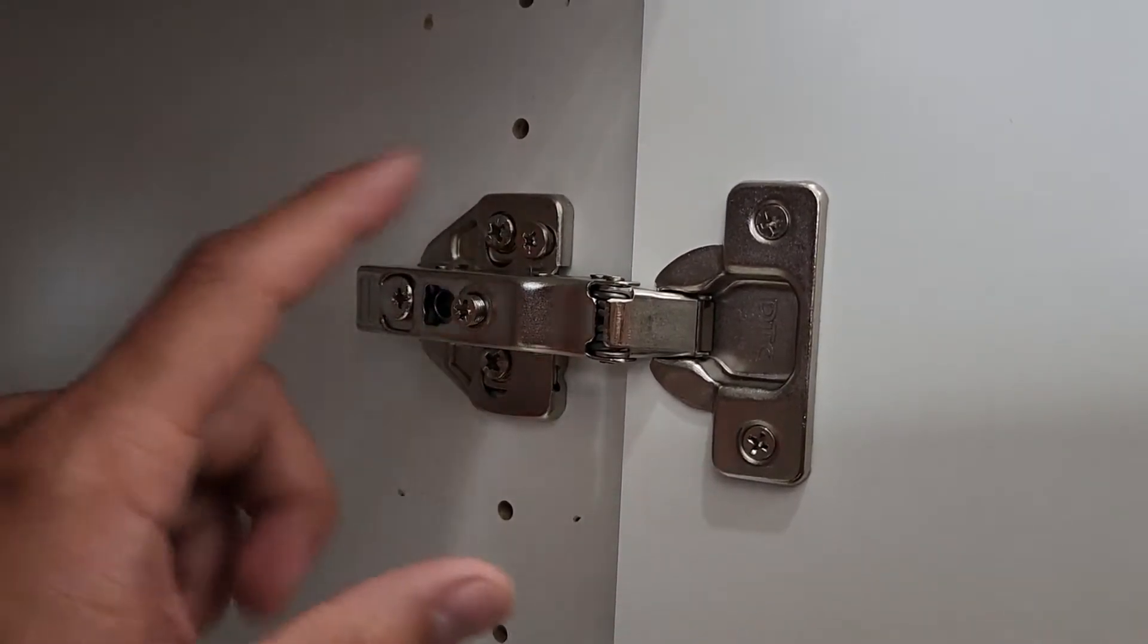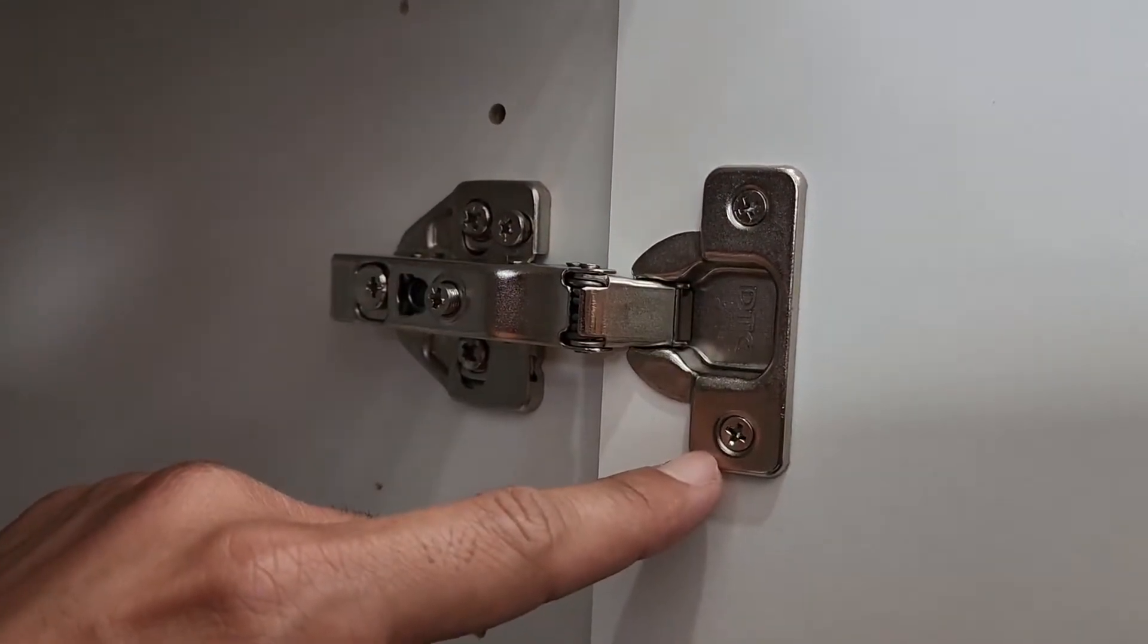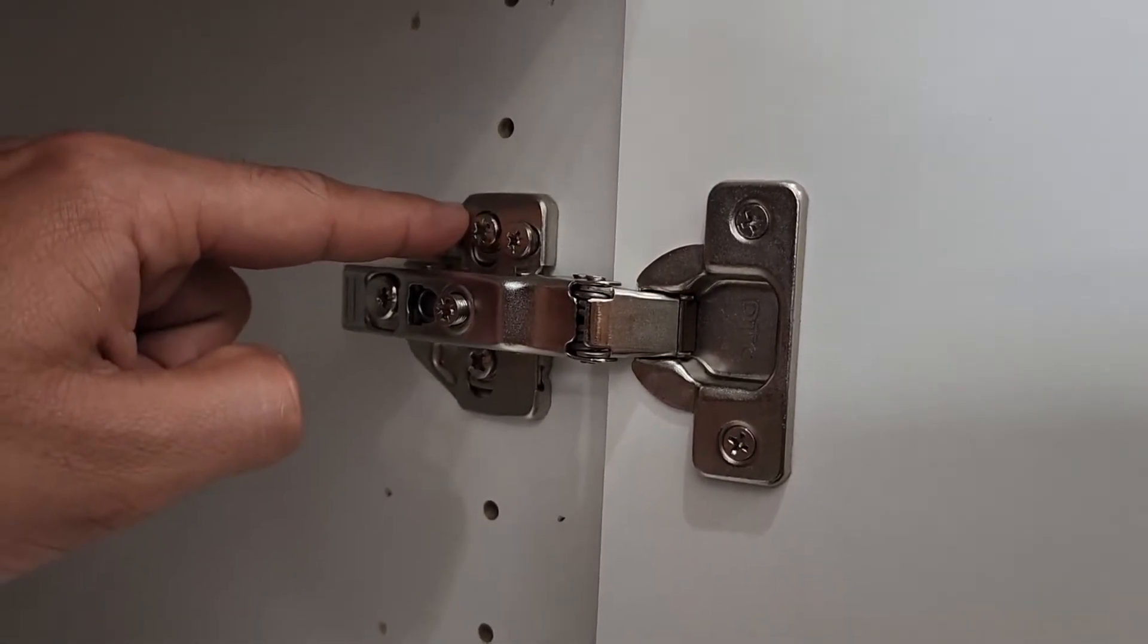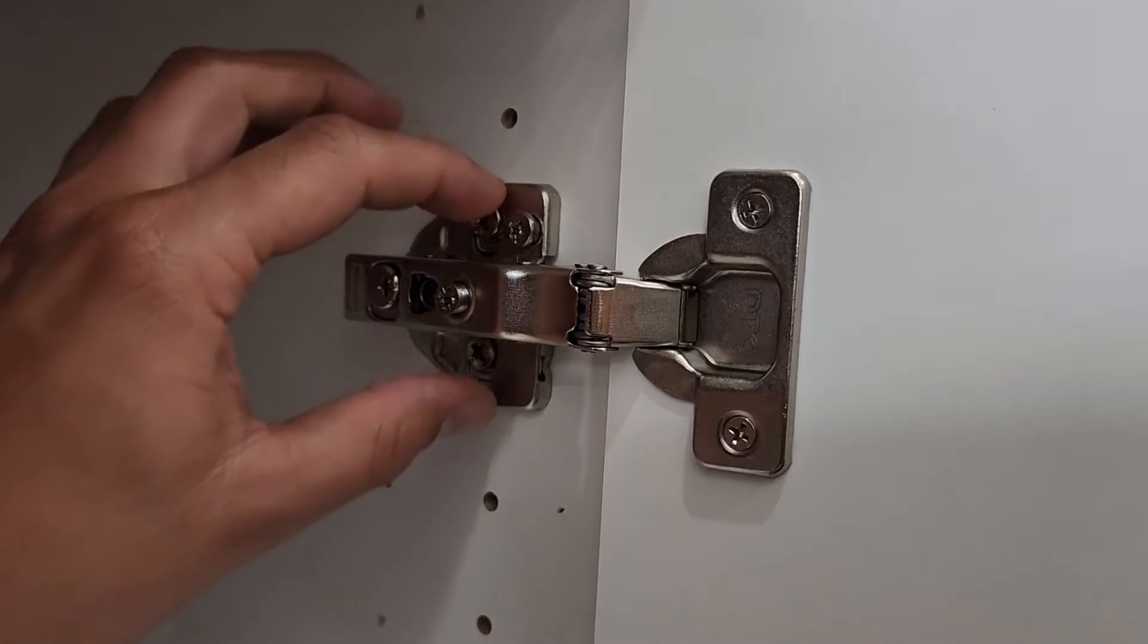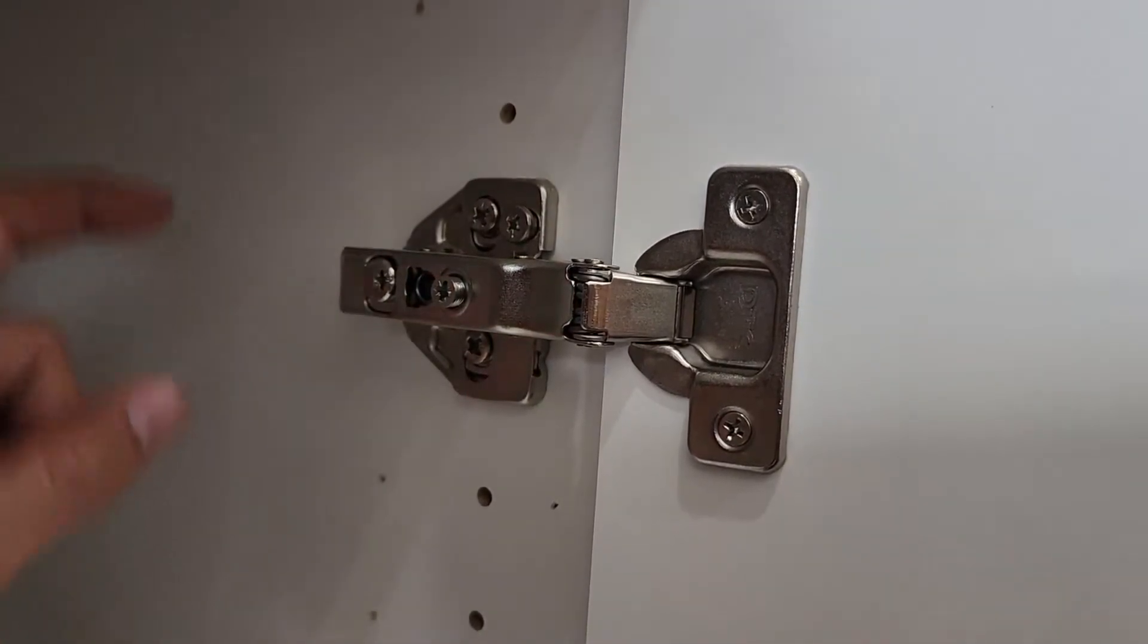If you see, there are multiple screws on this hinge. These two are the door mounting screws, so you don't have to worry about these. Then there are screws on the top and bottom - those are the hinge mount plate screws. They are only used to install the hinge.